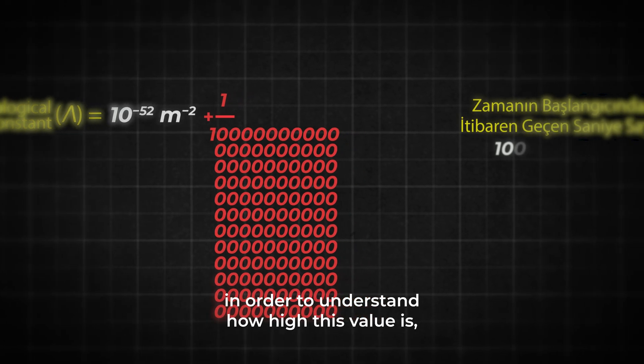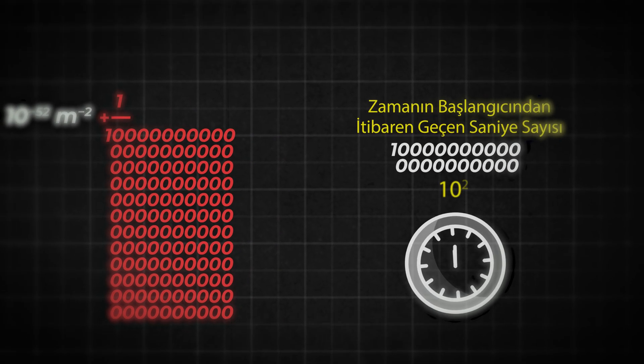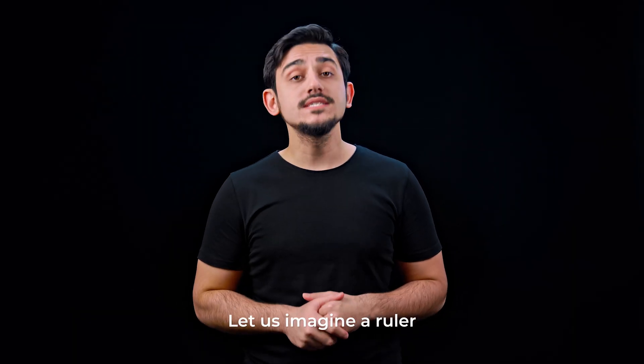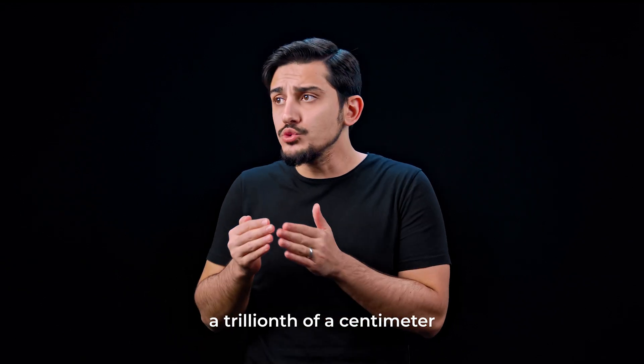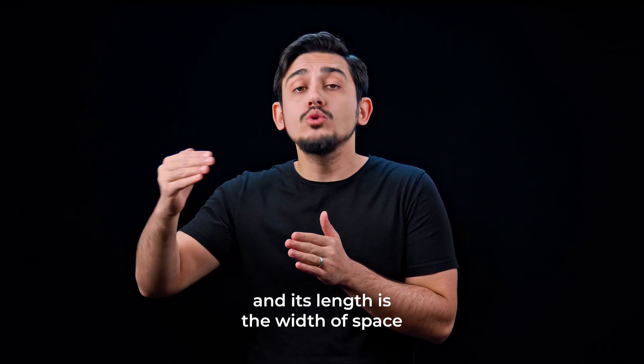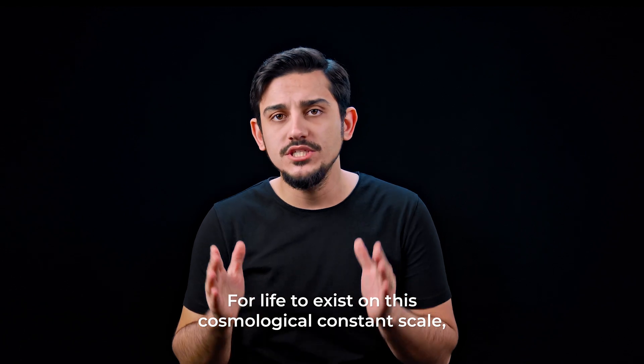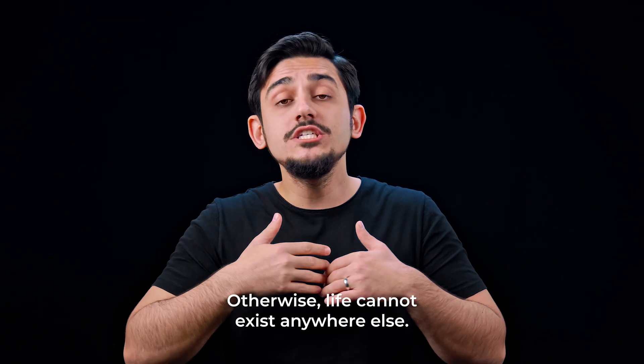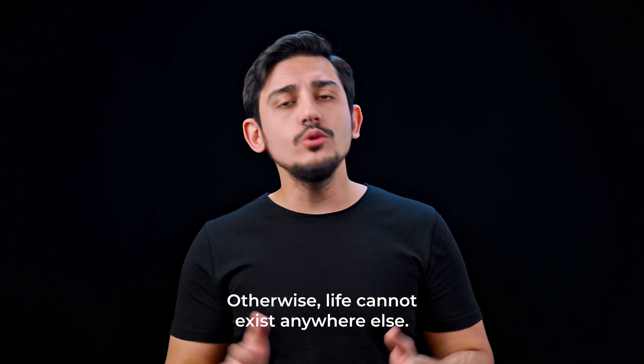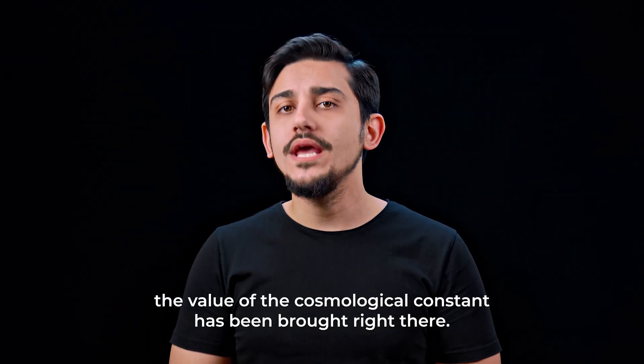By the way, in order to understand how high this value is, you can compare it to the number of seconds since the beginning of time, which equals about 10 to the 20. We can understand this better with an example. Let us imagine a ruler that is divided into units as small as a trillion times a trillionth of a centimeter, and its length is the width of space, which is 93 billion light years. For life to exist on this cosmological constant scale, the scale has to be brought to a single place, otherwise life cannot exist anywhere else. And we see that for some reason, the value of the cosmological constant has been brought right there.